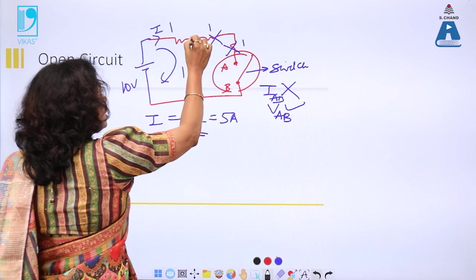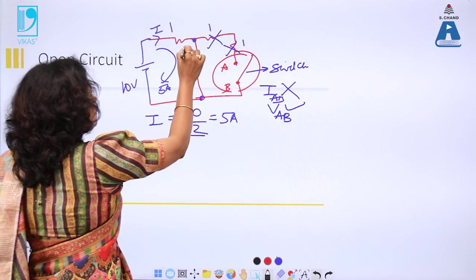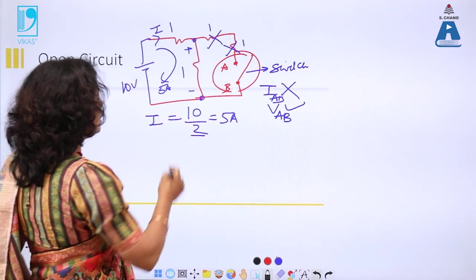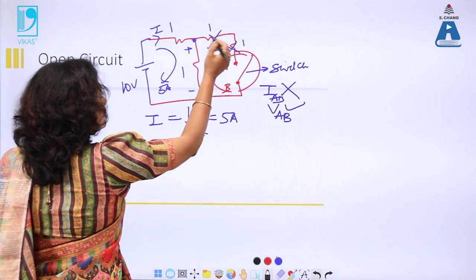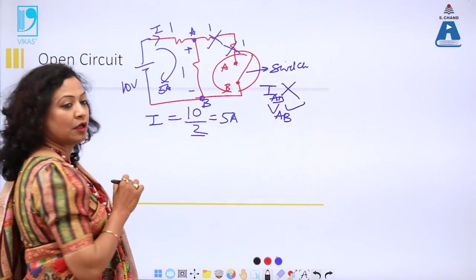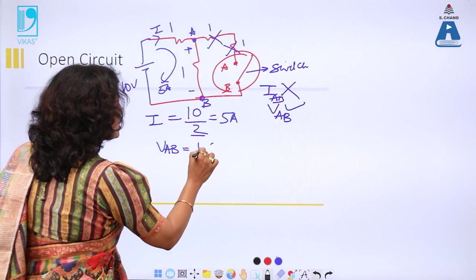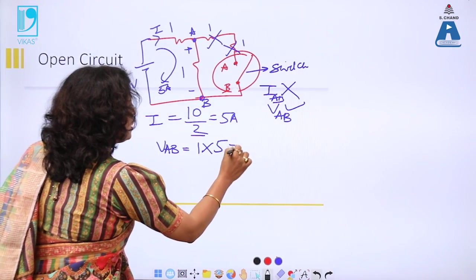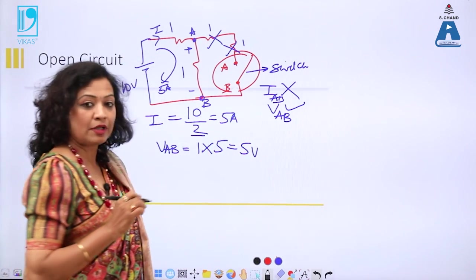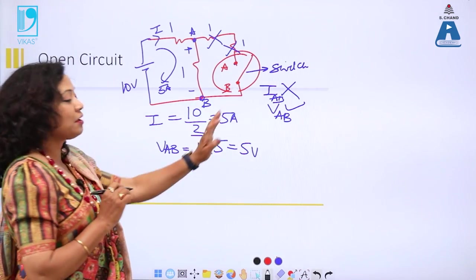What about the voltage between the two open terminals A and B? With a current of 5 amperes flowing through a 1Ω resistance (the branch adjacent to terminal B), the voltage across A and B is I × R = 5 × 1 = 5 volts. So there is indeed a voltage across the open terminals, confirming that voltage can exist in an open circuit.